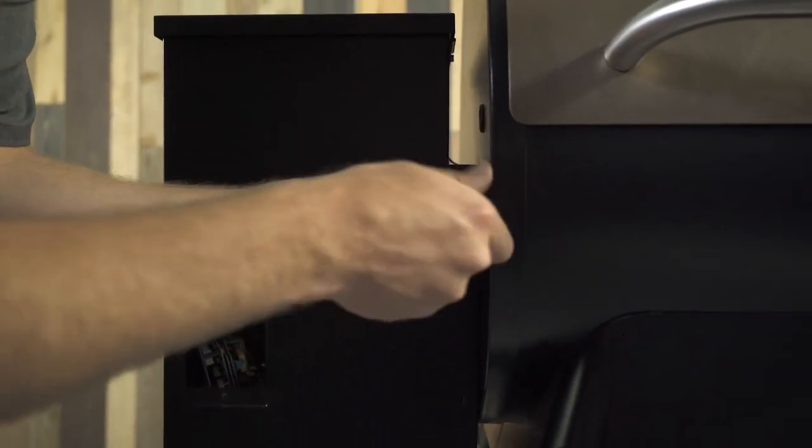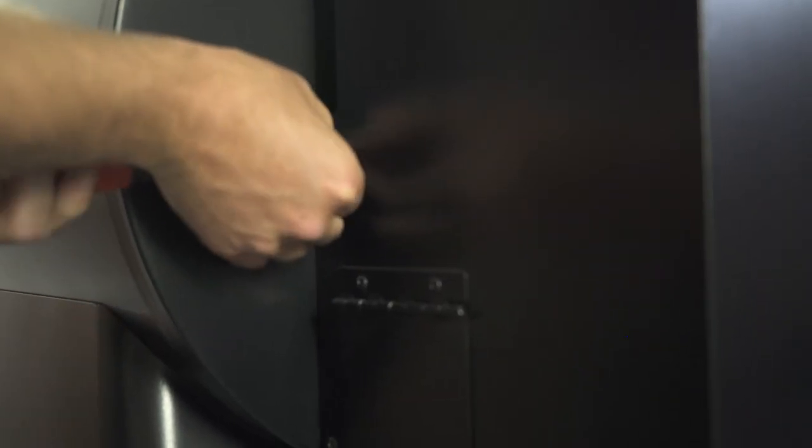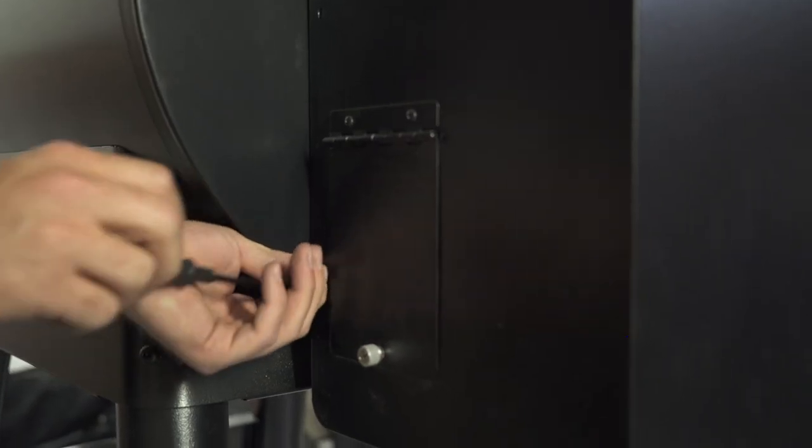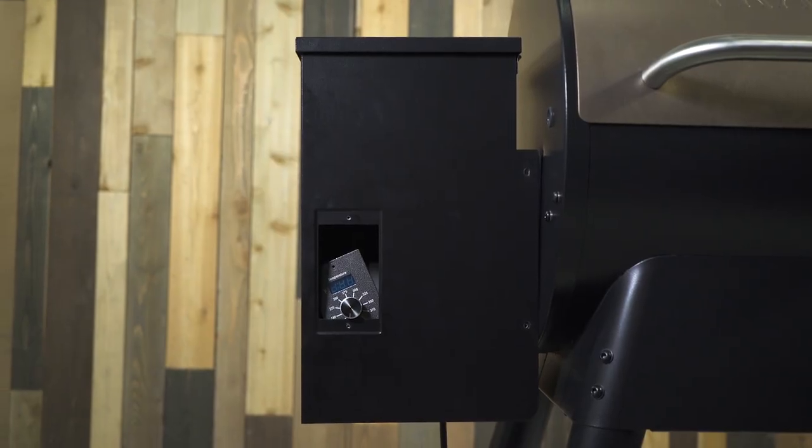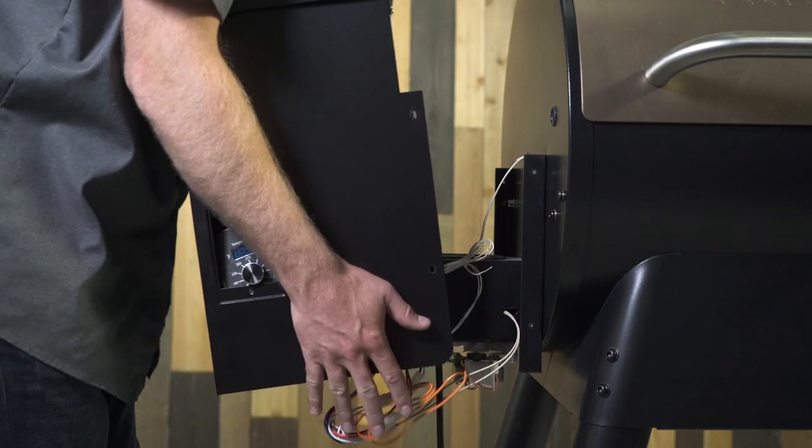After that, you'll want to remove the four screws that mount the hopper to the side of your grill. There's two screws in the front and two in the back. Once those screws are removed, you'll be able to lift from the bottom, lift the hopper off of the side of the grill and set it aside.